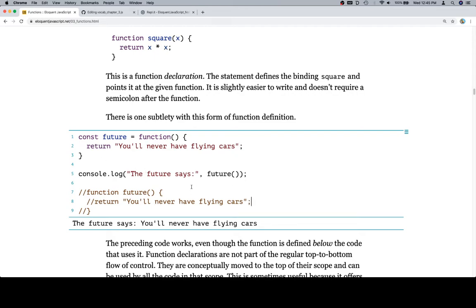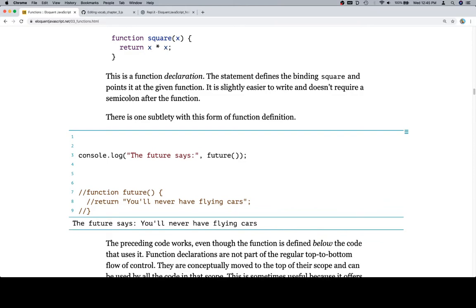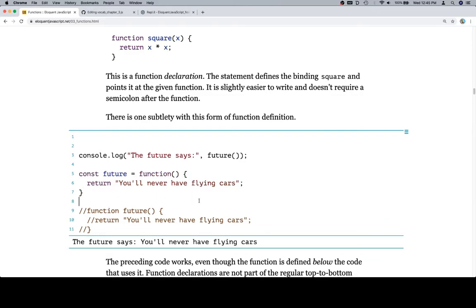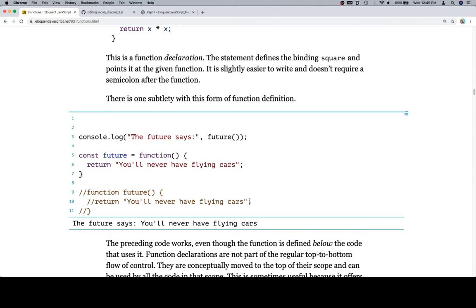Now, what happens in this case is we're going to get the same result, right? Because we've defined future before we're calling future. Now, if we're trying to get at what we just did, let's go ahead and cut this using command X or control X, and we're going to paste it using command V or control V beneath here. So theoretically, we've done the same thing, but as we just read, this isn't going to work, right?